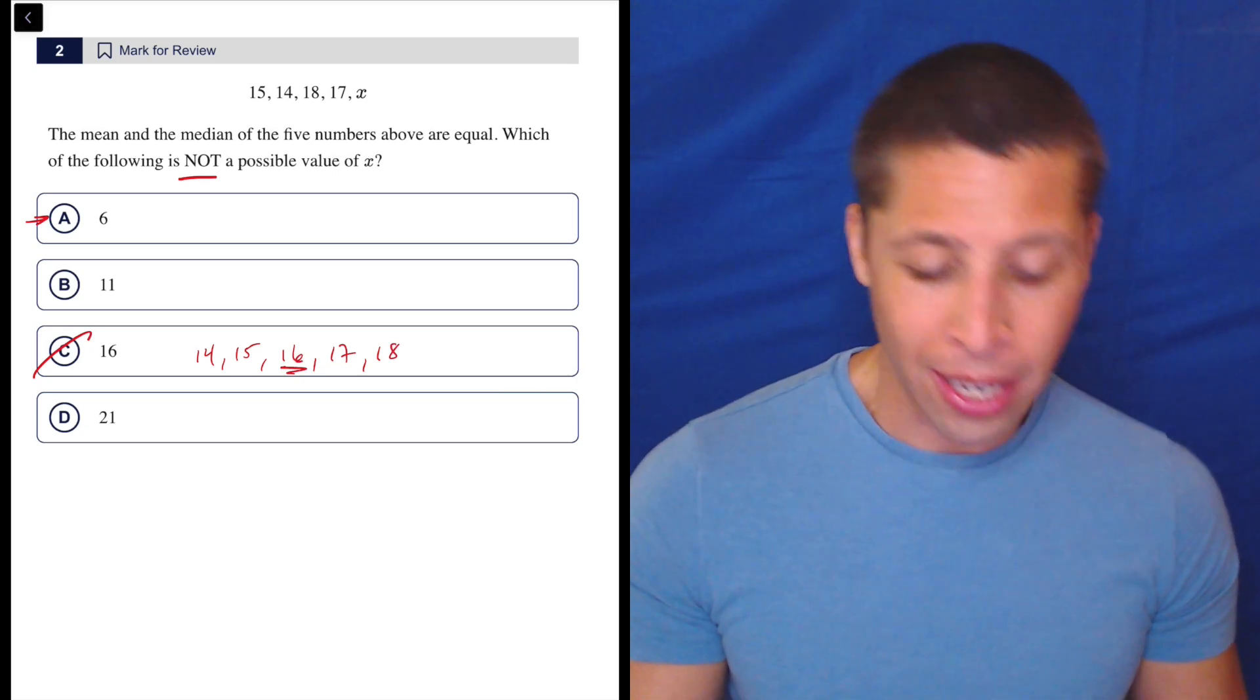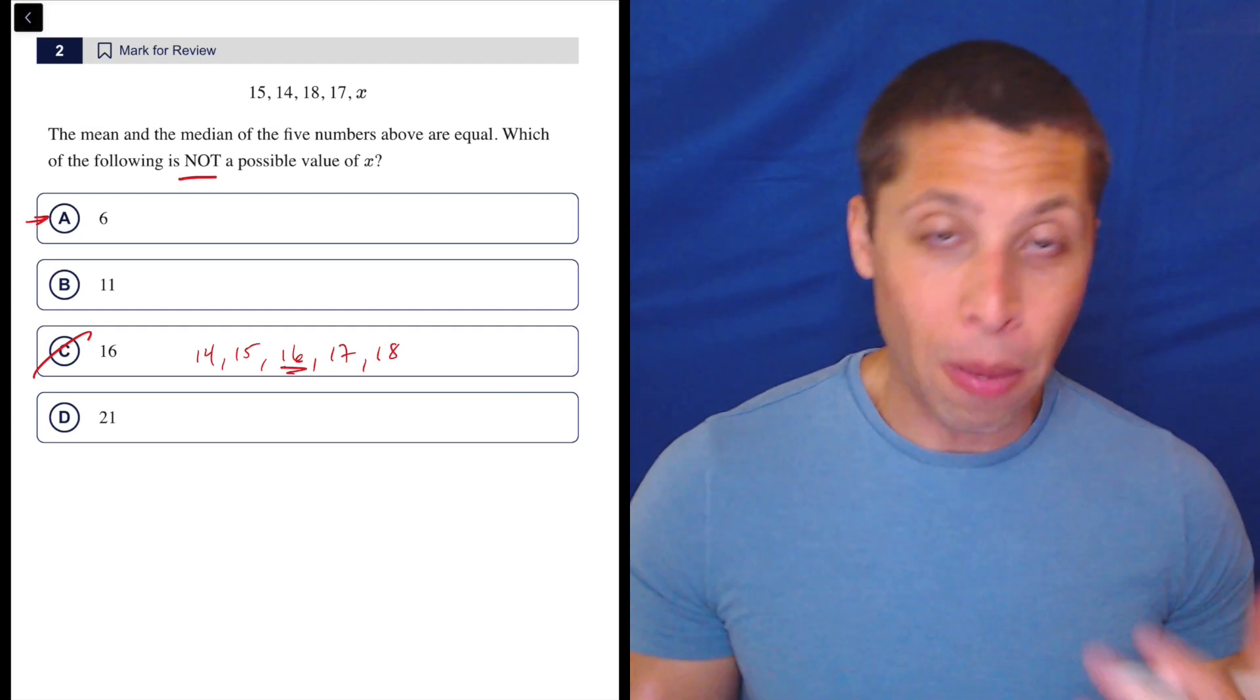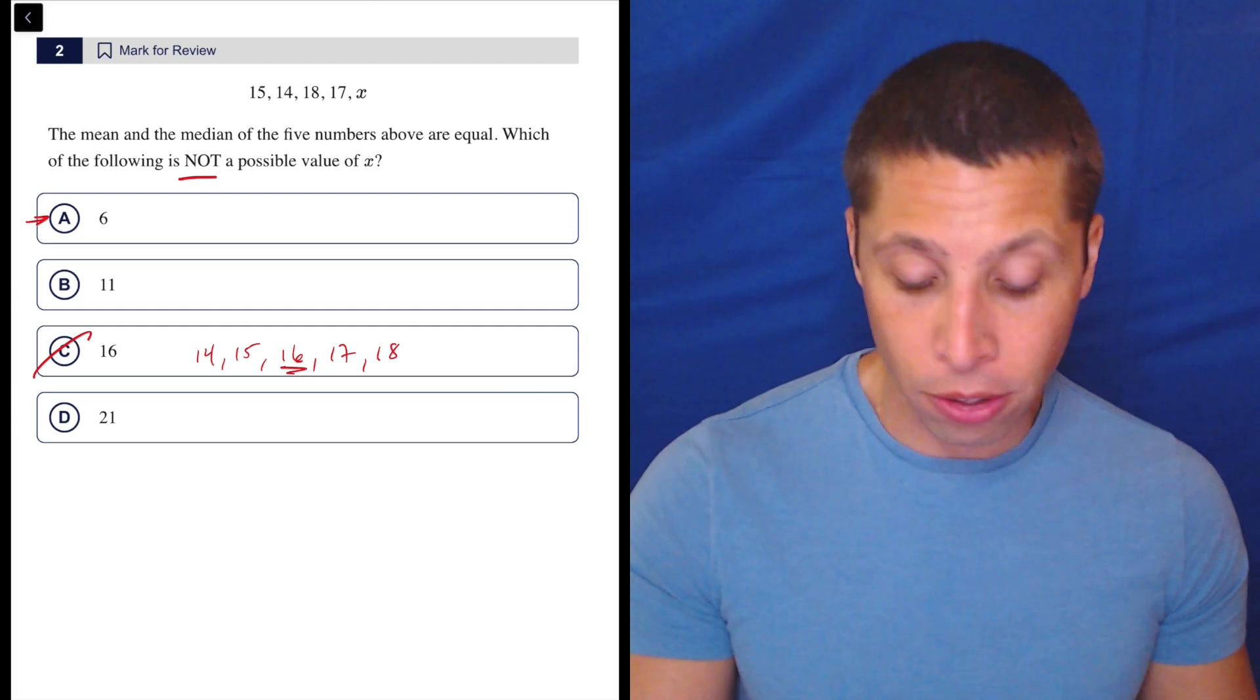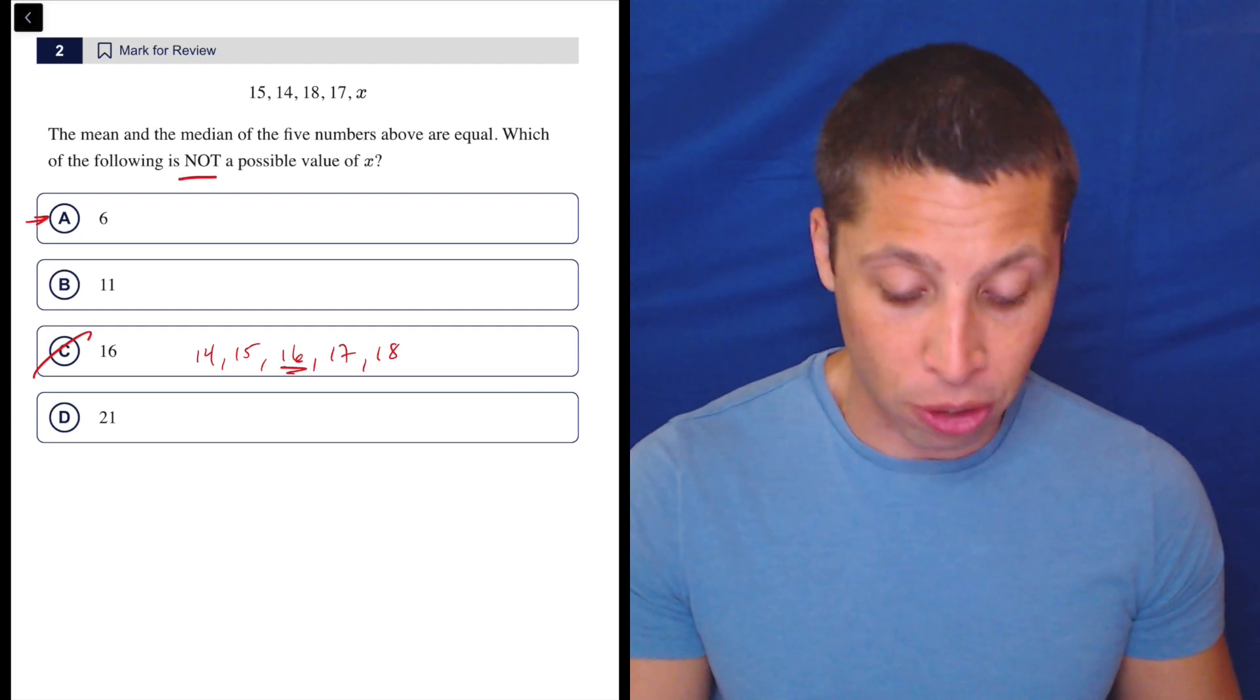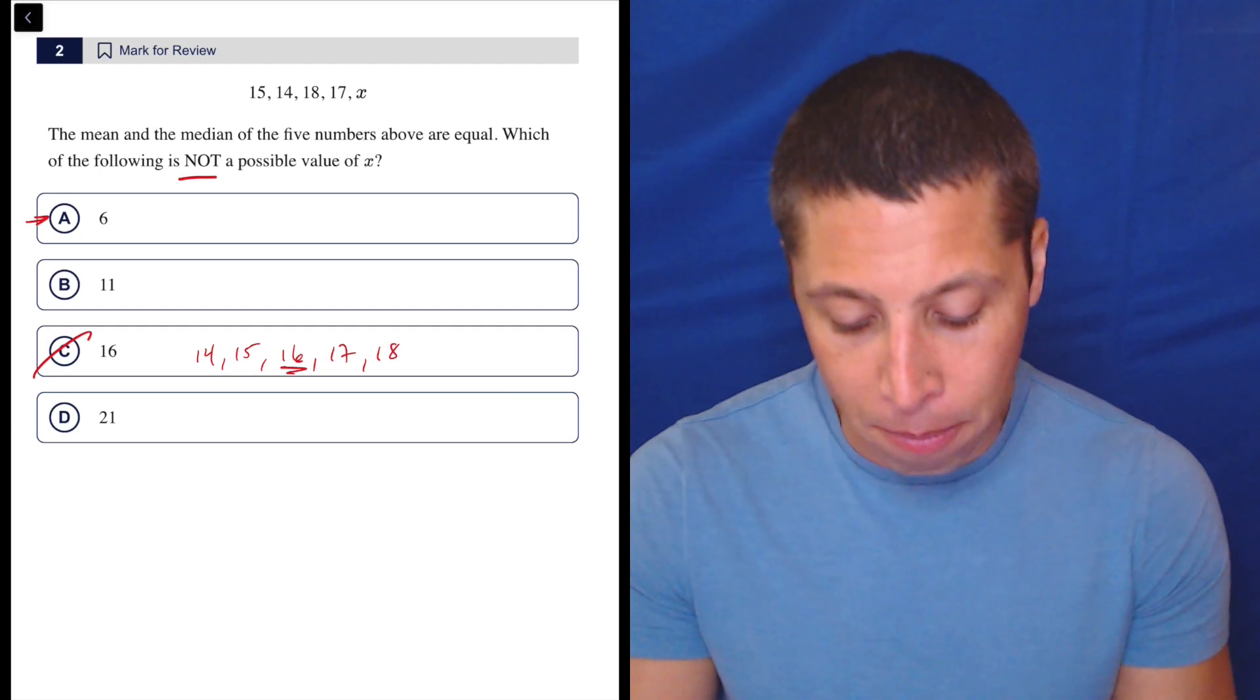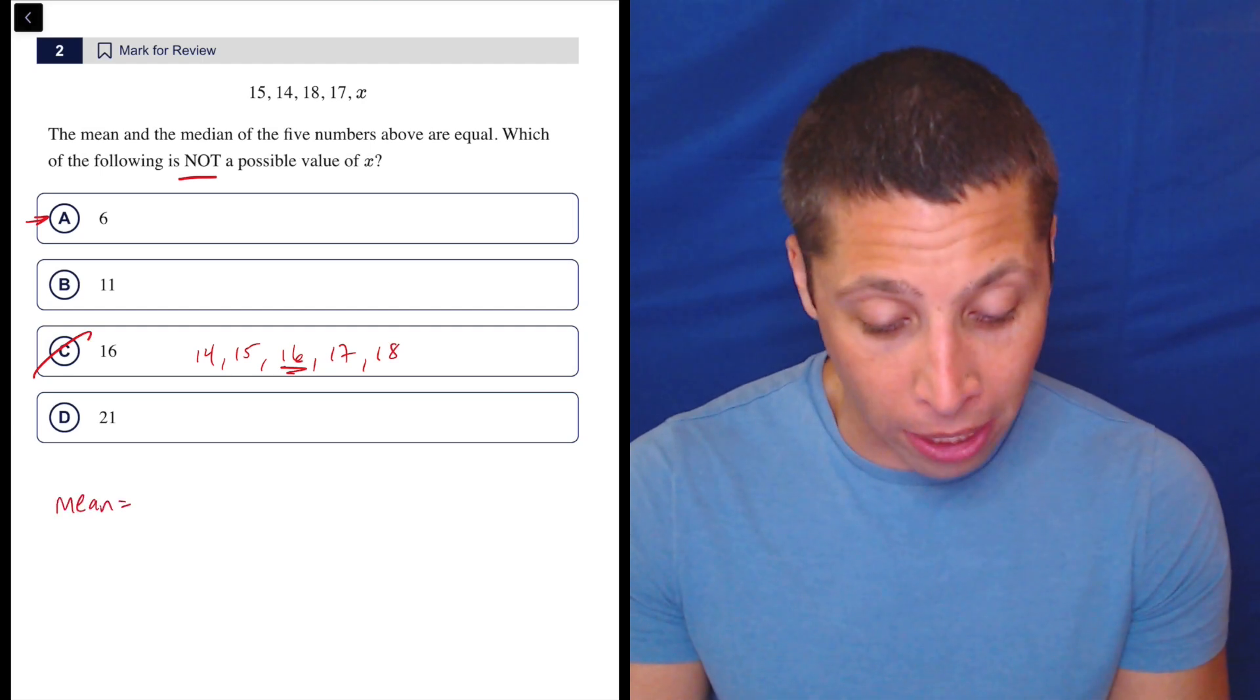11 and 21, they're pretty close to these other numbers. So maybe something's going to happen where the mean and the median are the same. But I would go to A and I would just see what happens if we get the mean. I wouldn't write this out on my scratch, but I could.